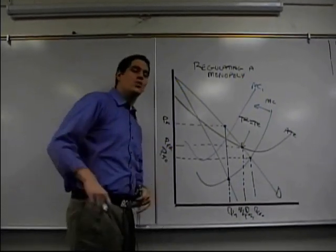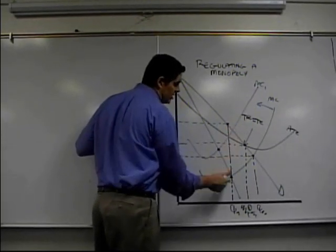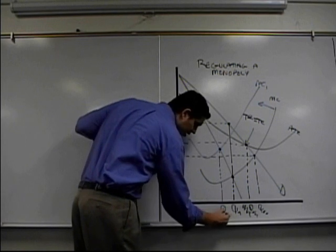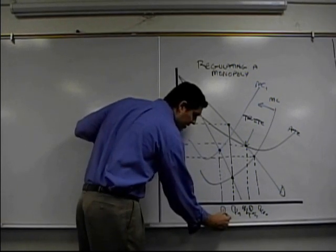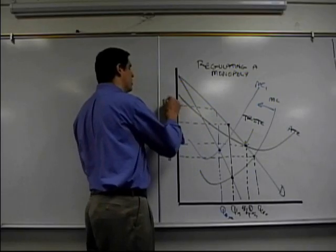If they do that, we'll take a look. The new marginal cost hits marginal revenue here. So now this is the quantity for a monopoly with the tax. And this would be the price they charge.